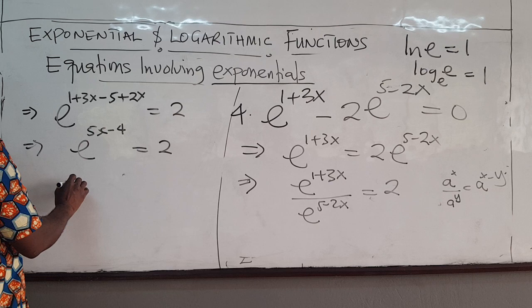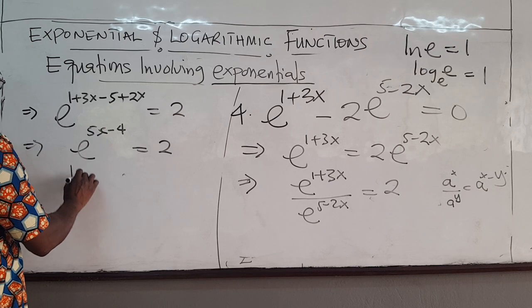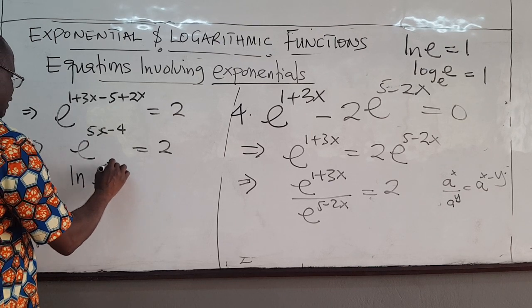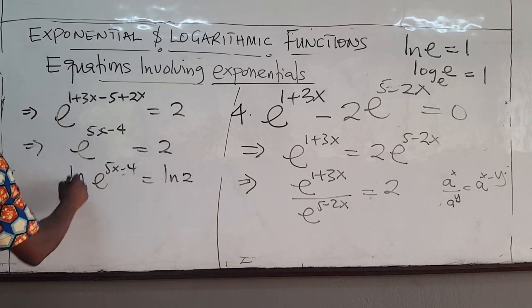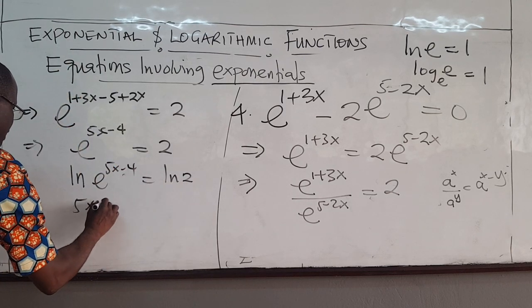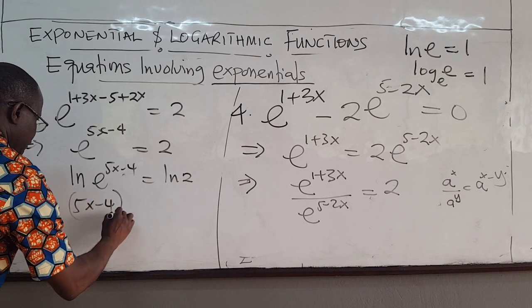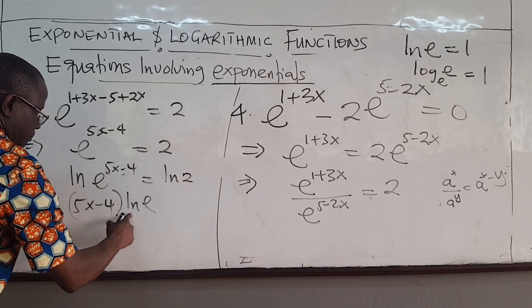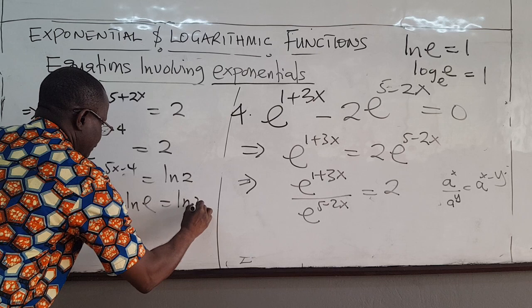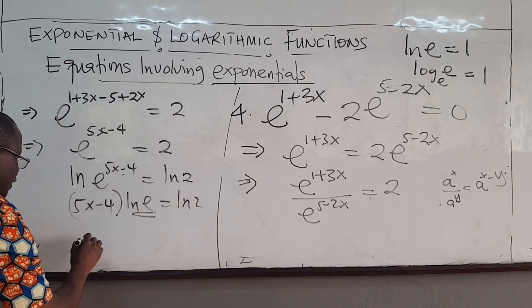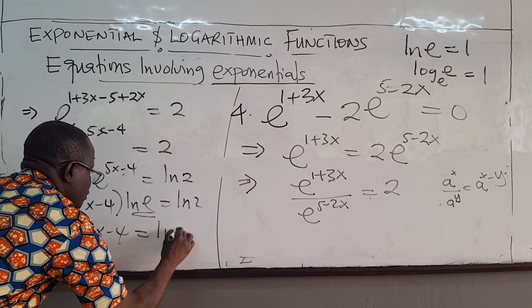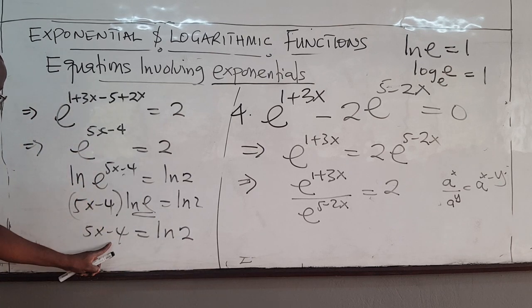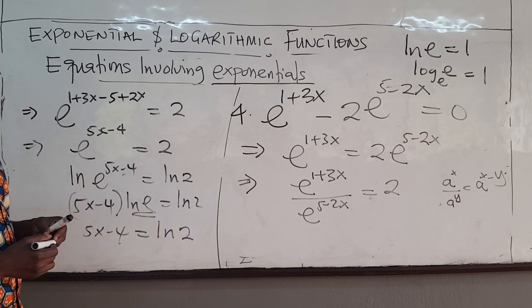So take the ln of both sides. If you do that, they're going to get ln(e^(5x-4)) = ln(2). This will give me 5x - 4 times ln(e). But ln(e) is 1, so really I have 5x - 4 = ln(2). So you just take this to that side and divide by 5.